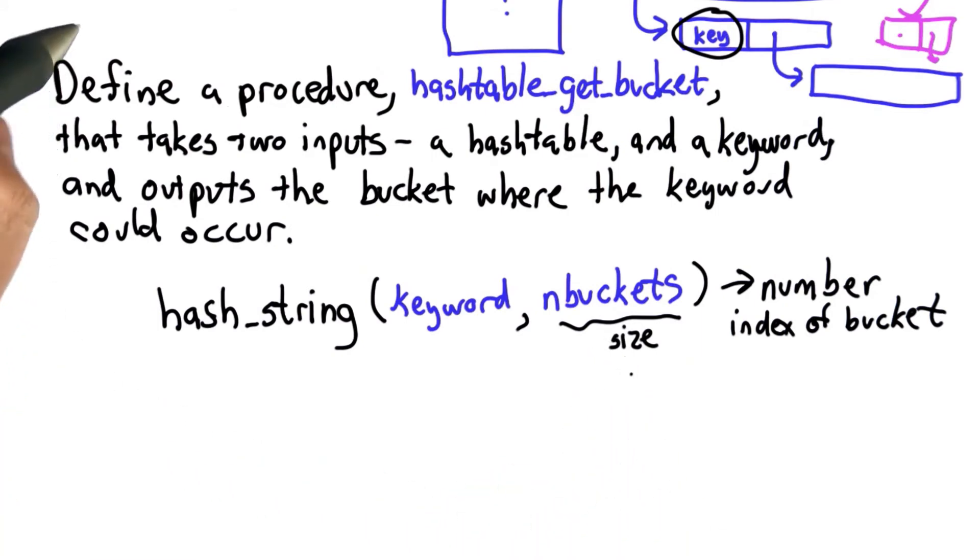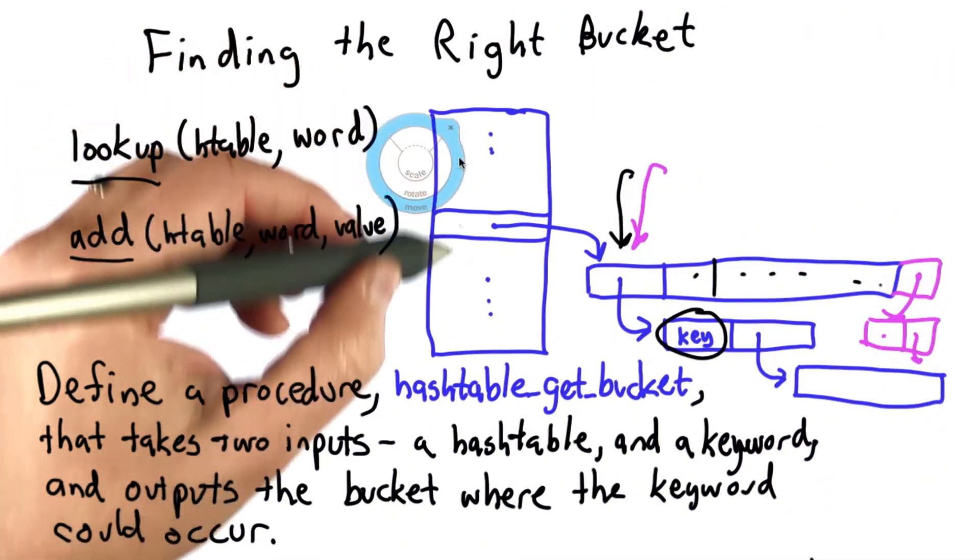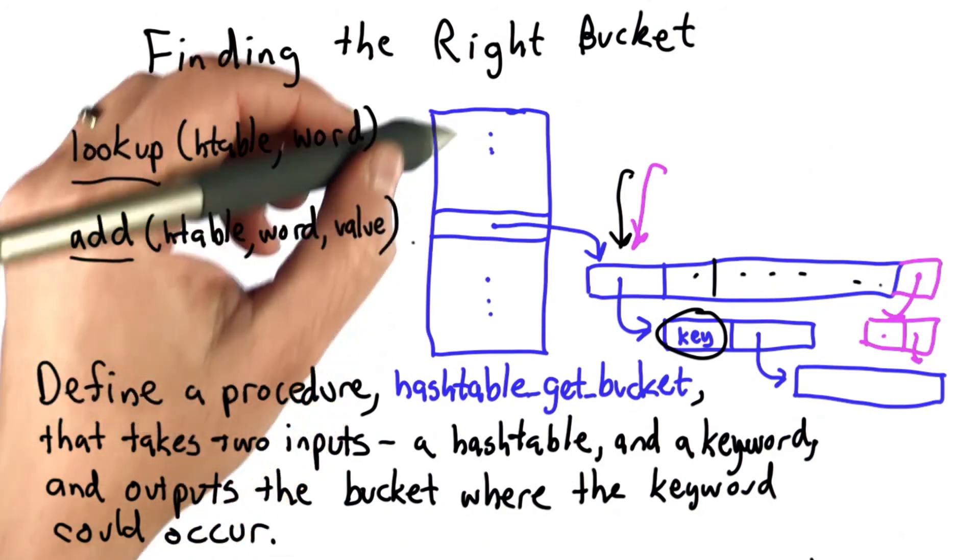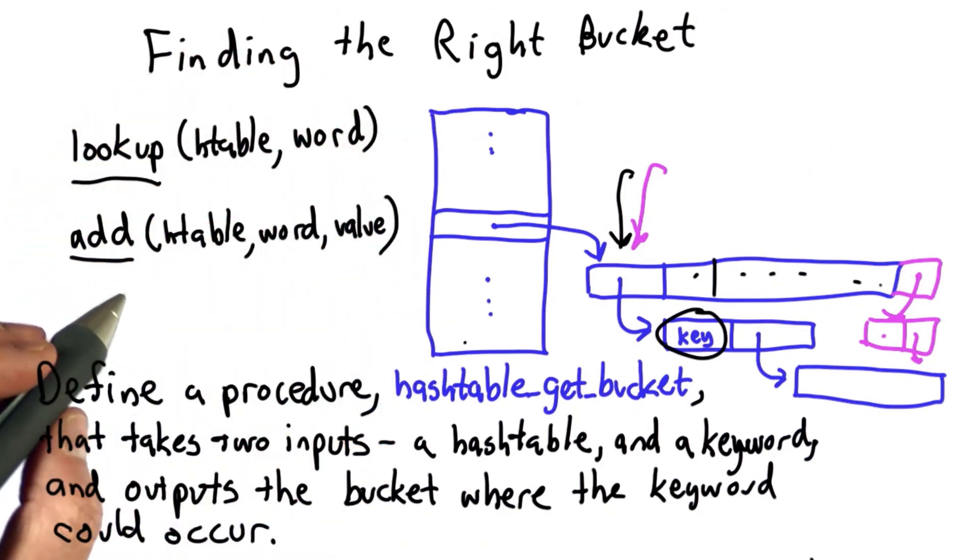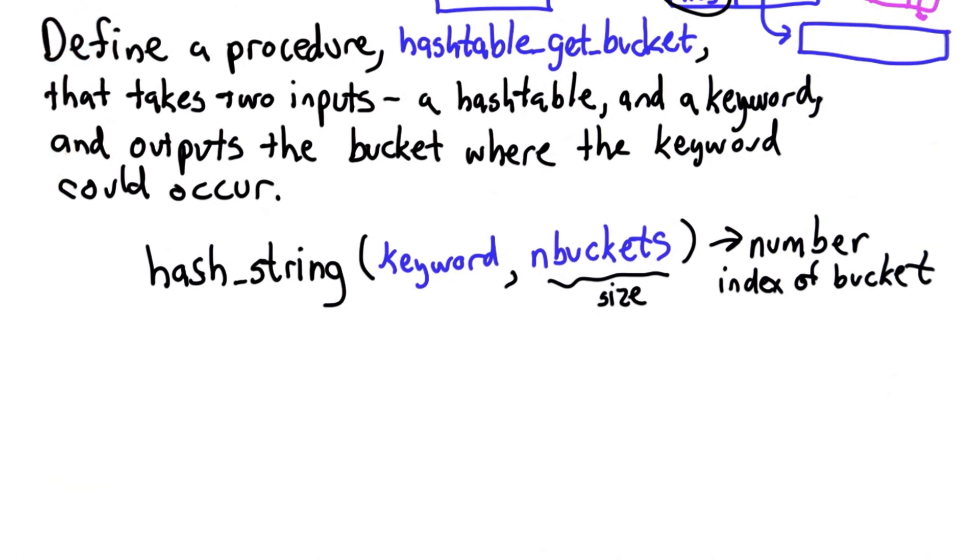If you remember the structure of the hash table, you should be able to figure out how to do that. Our hash table is a list of buckets, so the value we want to pass to hash_string is the size of that hash table, the number of elements in the list of buckets.